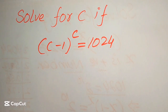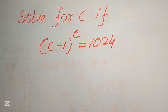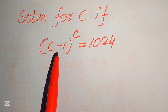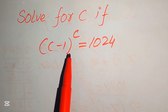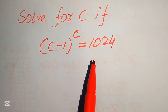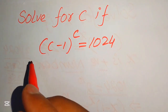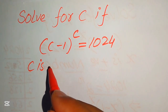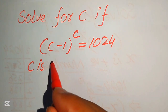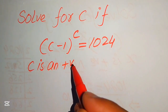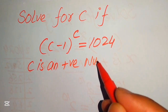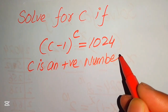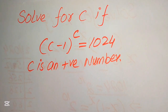Hello everyone. Today I want to show you how to solve this problem for the values of c, if we have c minus 1 to the power of c equals 1024, where c must be a positive number. So it means that we solve this problem for the positive value of c.